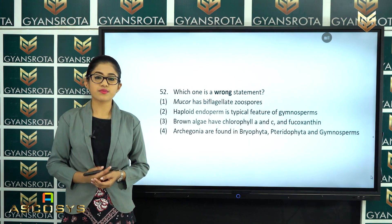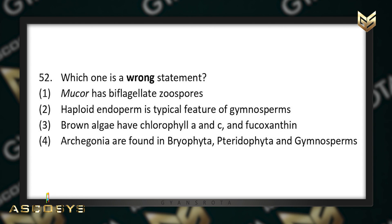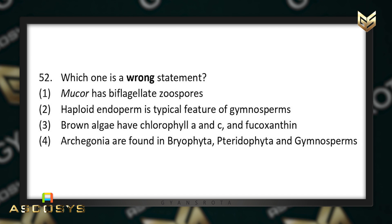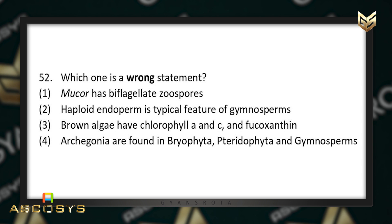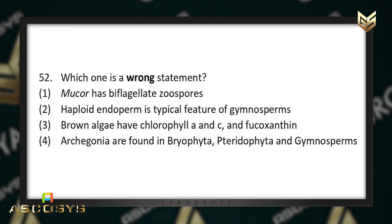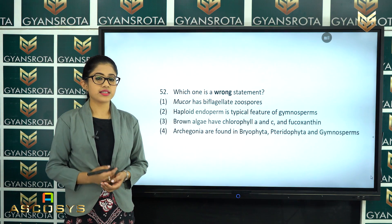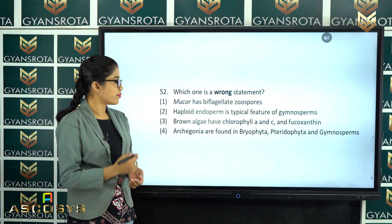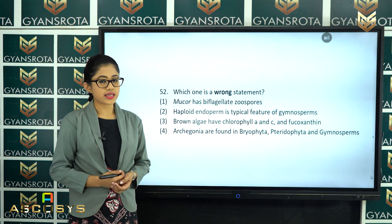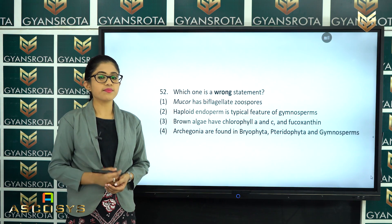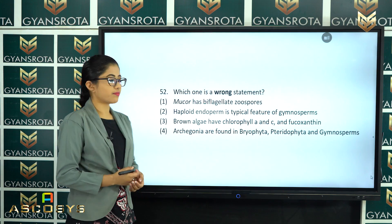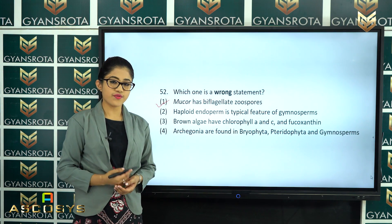The next question is question number 52. Which one is a wrong statement? Mucor has a biflagellate zoospore; haploid endosperm is a typical feature of gymnosperm; brown algae have chlorophyll A and C and fucoxanthin; archegonia are found in bryophyta, pteridophyta and gymnosperm. From the chapter Plant Kingdom, the wrong statement is the first one — Mucor has a biflagellate zoospore — because Mucor is a non-motile organism. Option number 1 is the correct answer.